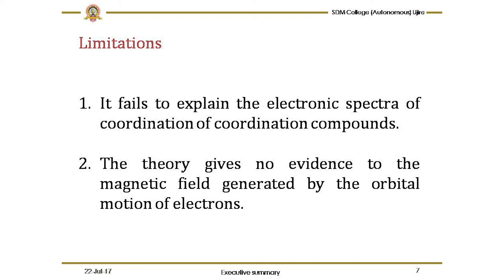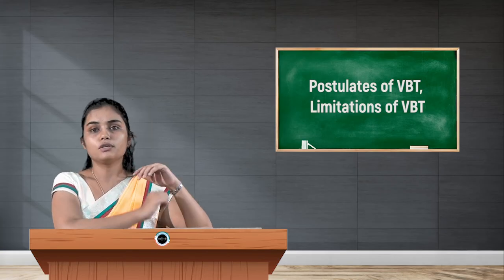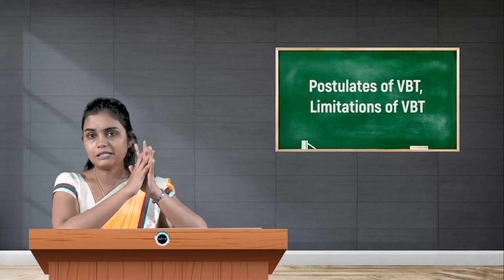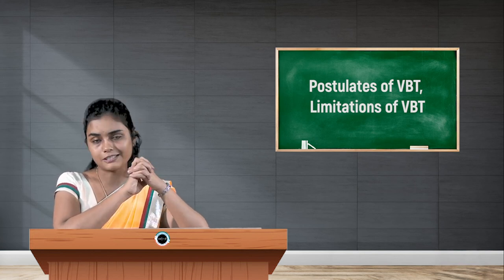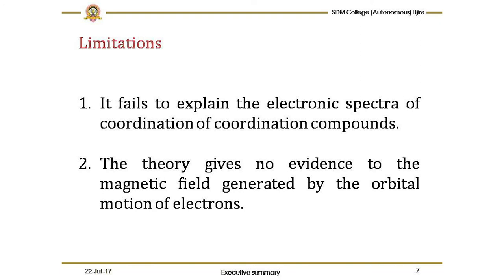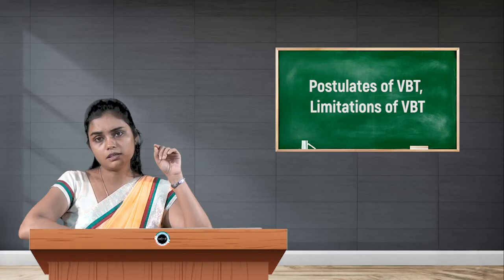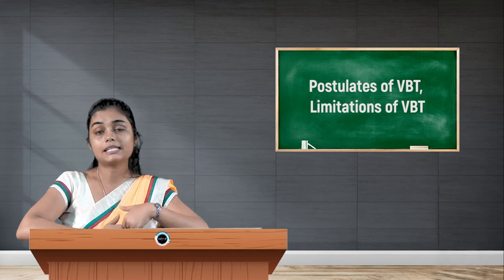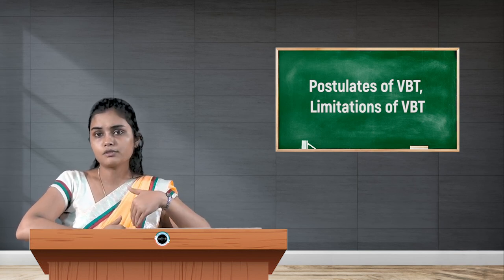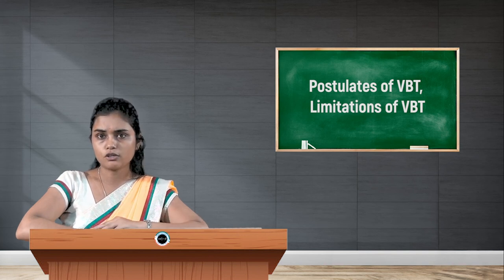The first limitation is that VBT fails to explain the electronic spectra of coordination compounds. Electronic spectra, also called visible spectra, are exhibited by transition elements. The visible region is a low-energy region where radiation is absorbed by the electrons of the central metal ion, which then get excited to a higher energy state. VBT failed to explain this, which is one of the important characteristics. We also know that most transition elements exhibit color, and color arises from the presence of unpaired electrons — this too was not explained by VBT.